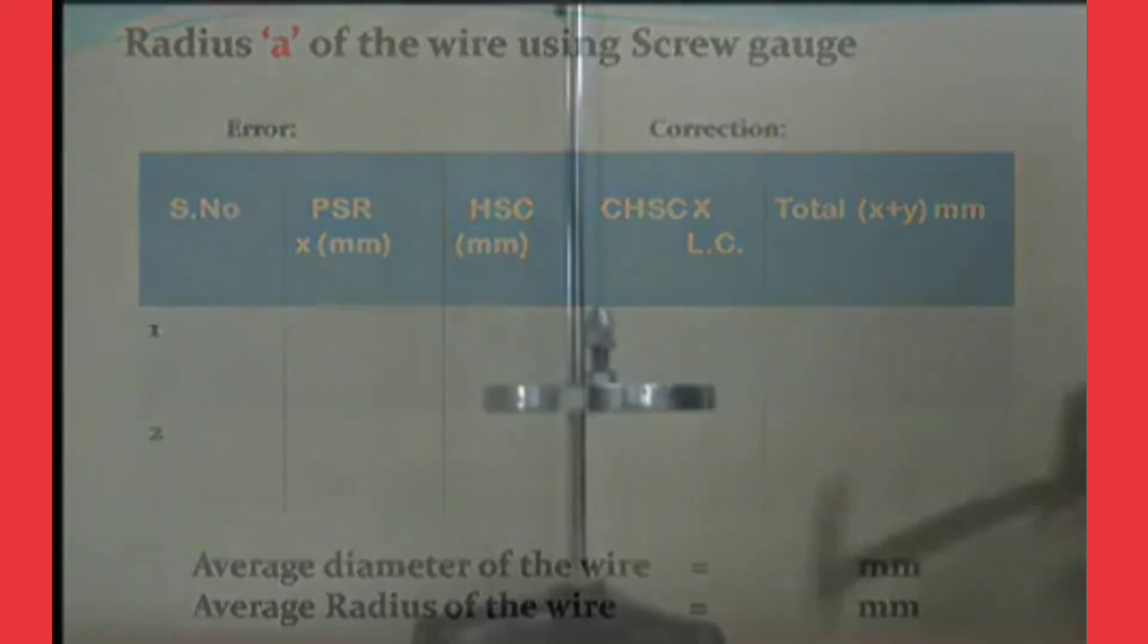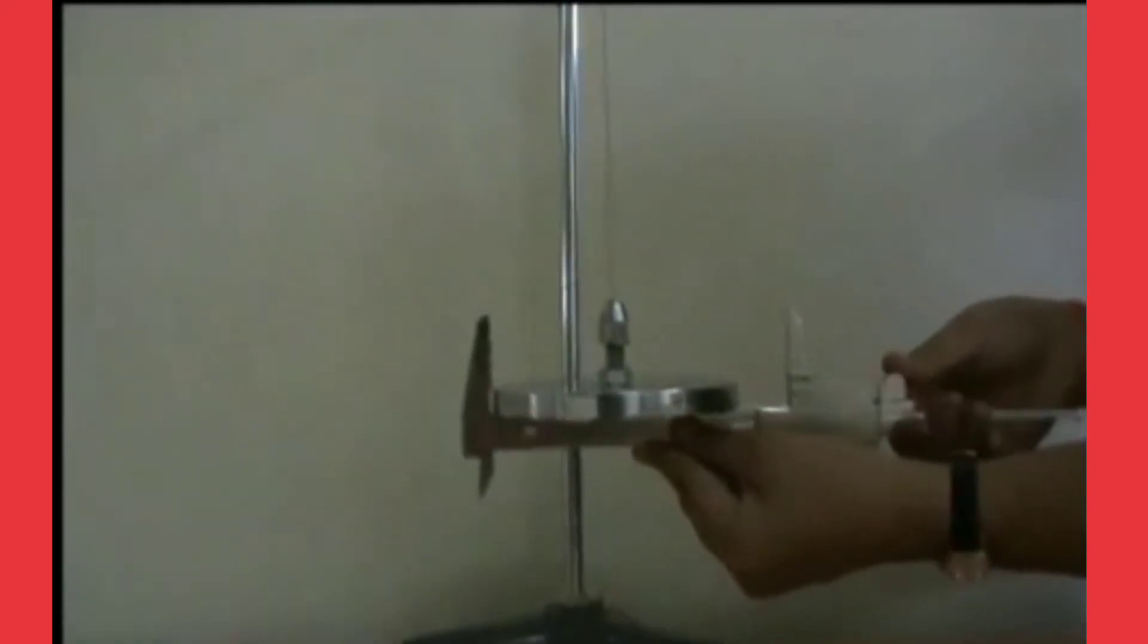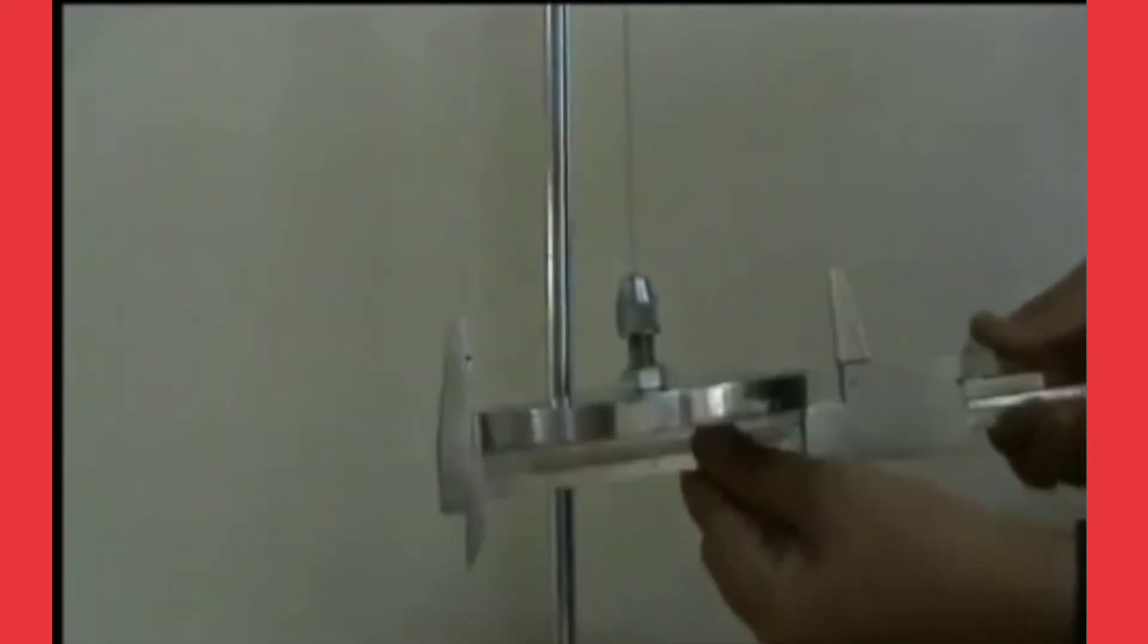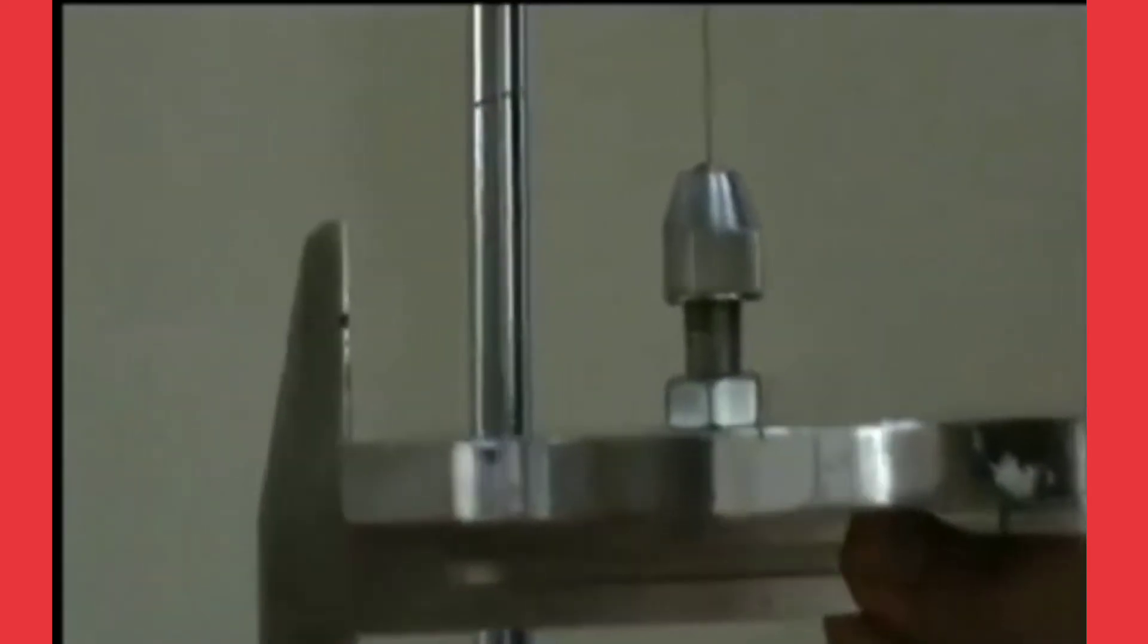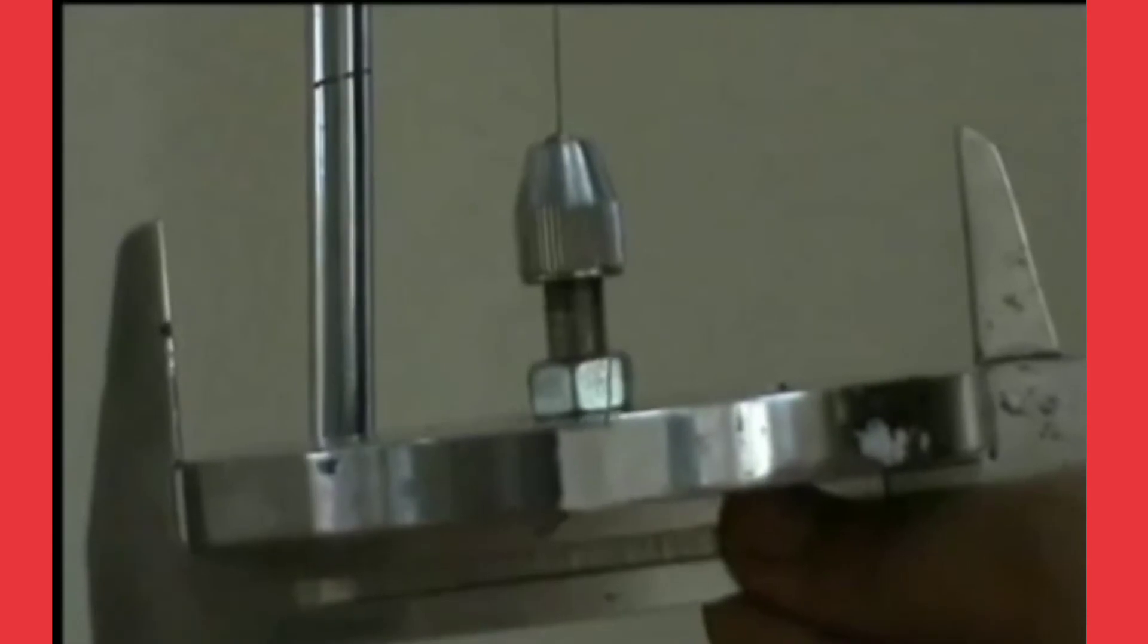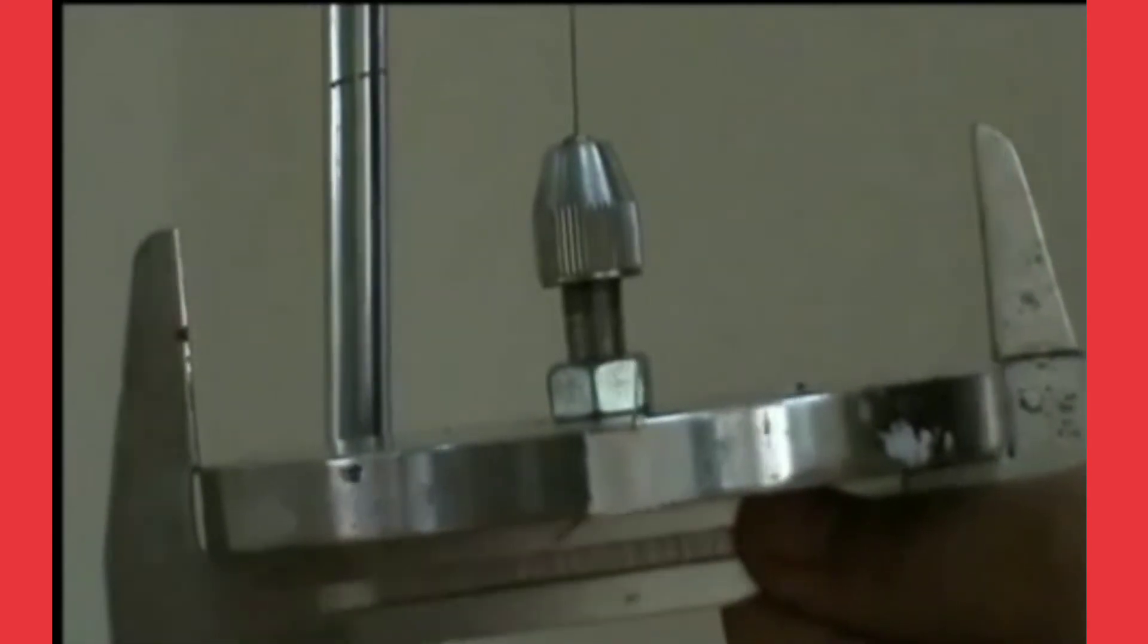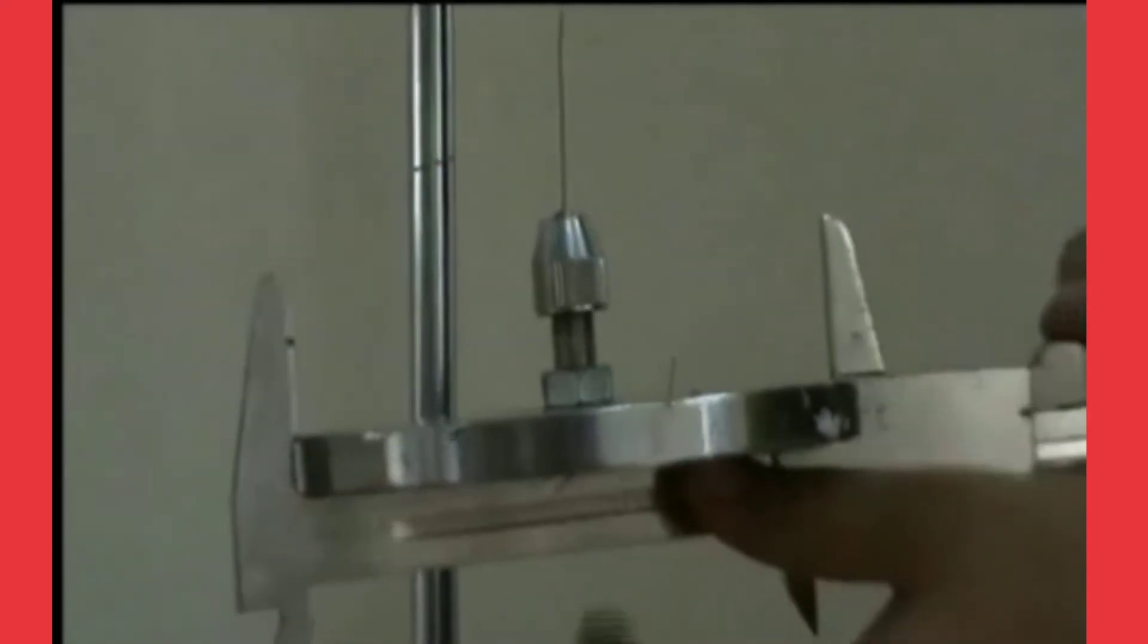Now we will keep the metal disc in between the outer jaws of the vernier calipers to calculate the diameter of the metal disc. Calipers also has two scales: one is main scale and second one is vernier scale.